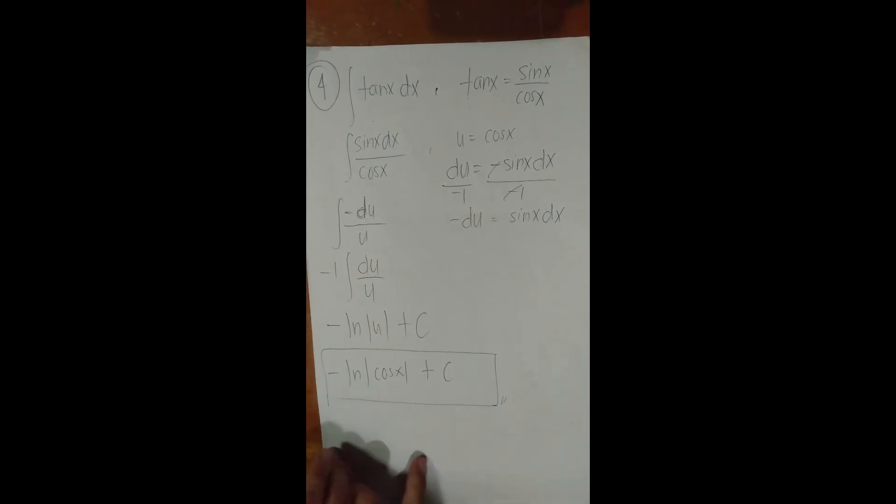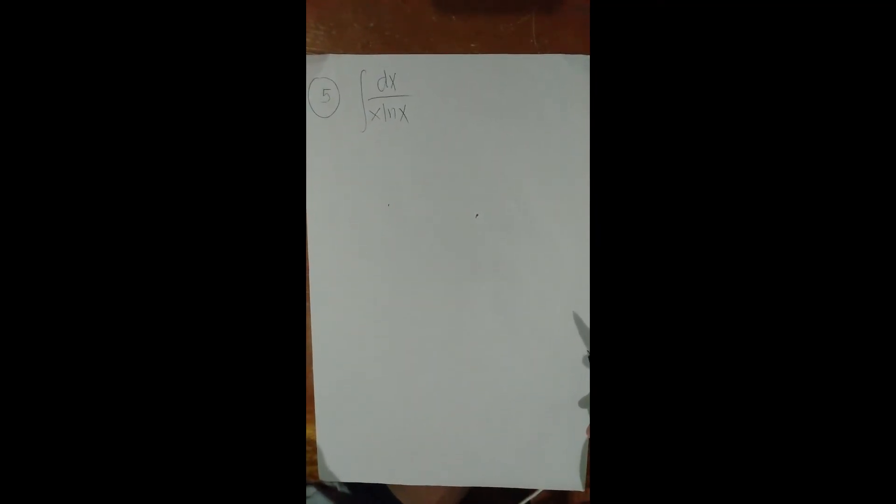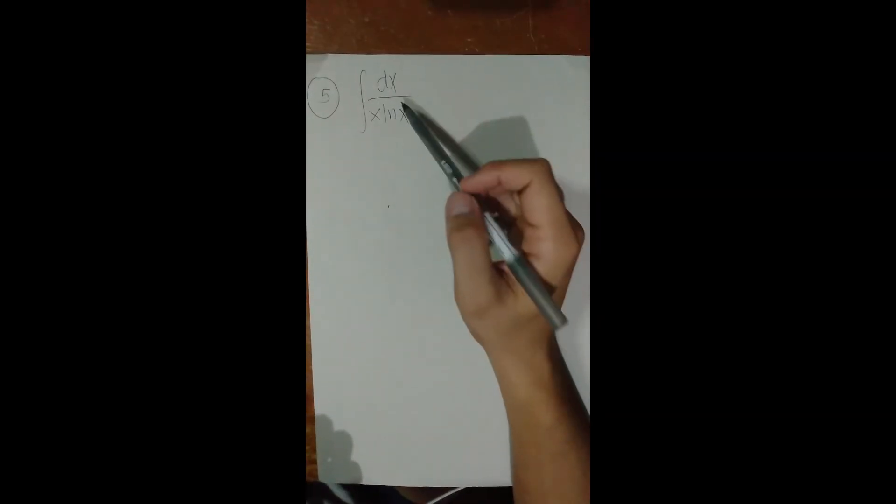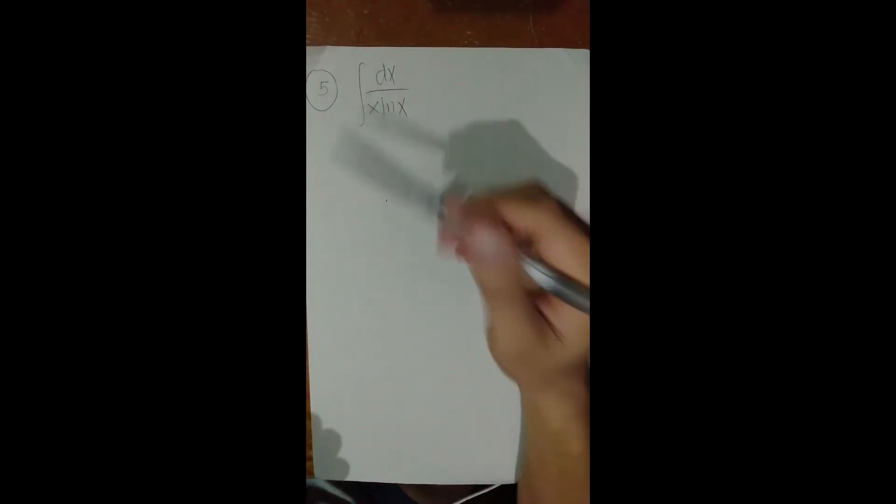Let's move to our last problem for this video. Our function is the integral of dx / (x · ln(x)). There's a natural logarithm in the function, which makes it tricky. What will our u be?